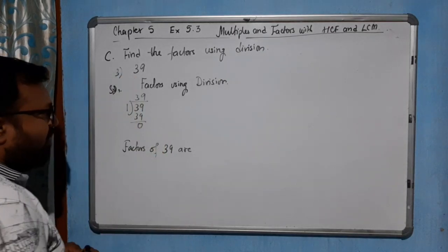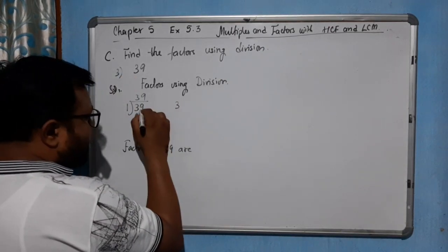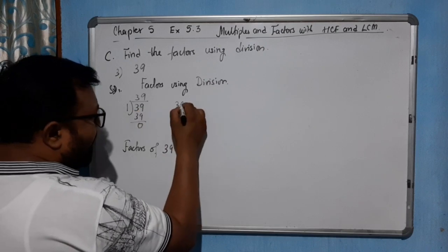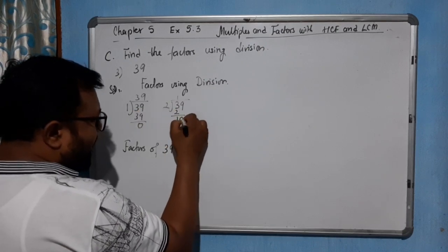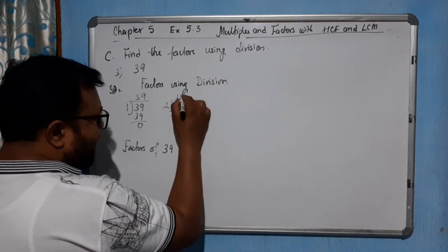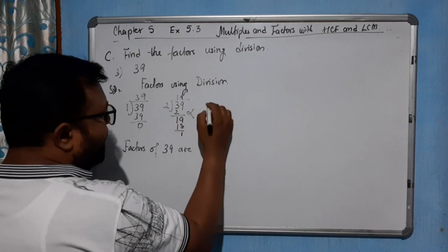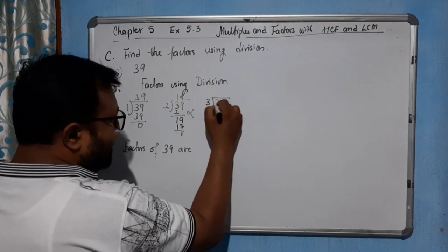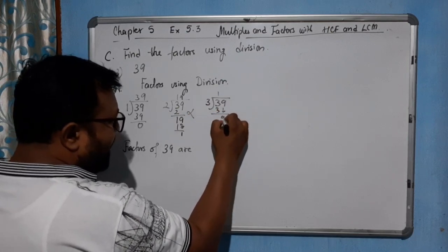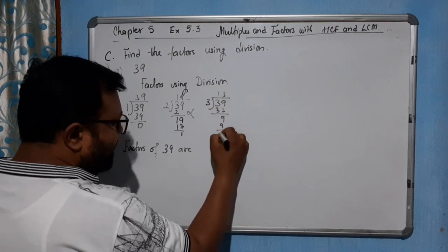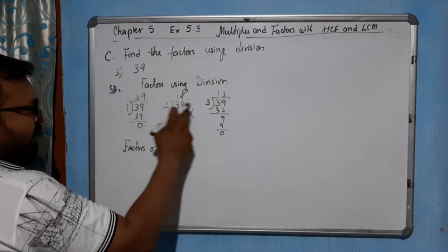By 2 — it is not possible because 39 is odd. 2 times 19 is 38, remainder 1, not possible. By 3 — 3 times 13 is 39, remainder 0. So 3 and 13 are factors of 39.